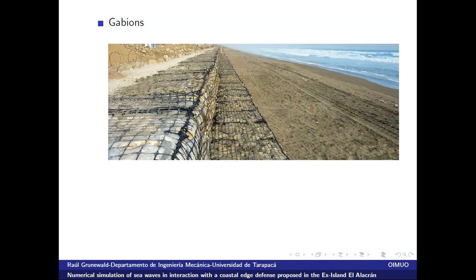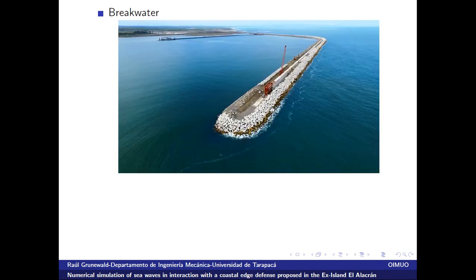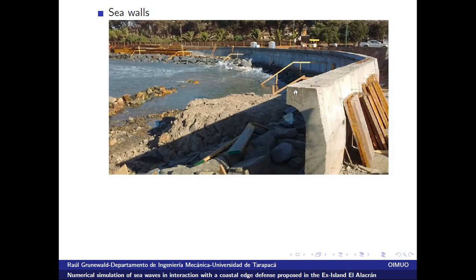Here we have some examples of coastal edge defenses: gabions, which are structures that protect the shore behind them from waves that come from the sea. We also have breakwater — in this case the breakwater of the port of Veracruz in Mexico, a big structure. And we have sea walls, such as this curved sea wall, which reflects the waves that come from the sea because of its geometry, protecting the shore behind it.